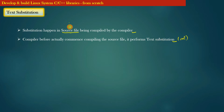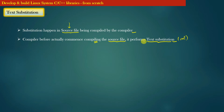Remember that text substitution happens in source files, not in header files. The compiler makes use of header files in order to perform text substitution in the source file. The second key point is that before the compiler actually starts compiling the source file, it performs text substitution in the source file being compiled.